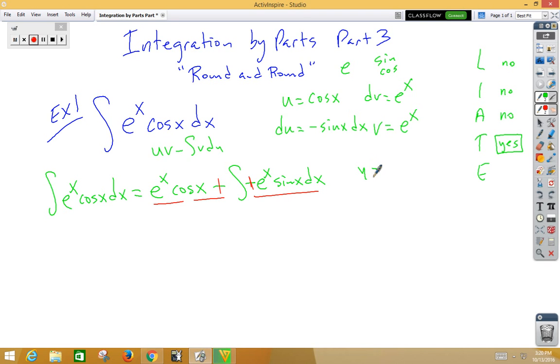Most people would prefer to bump this negative outside, so let's go ahead and bump that outside. Now this piece is done. Let's look at that back part. If we look at that back part, it's another round and round. So again, we need to pick an appropriate u. So no logs, no inverse trig, no algebra, yes trig. u is sine x, dv is e to the x, v is e to the x, and du, the derivative of sine, is cosine x dx.